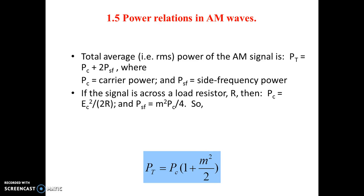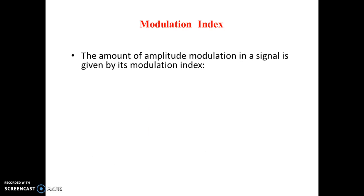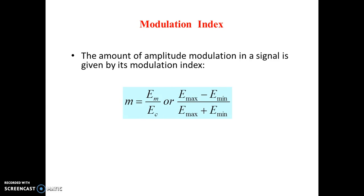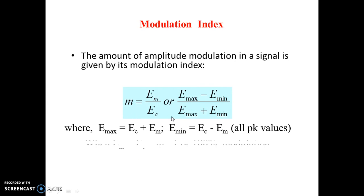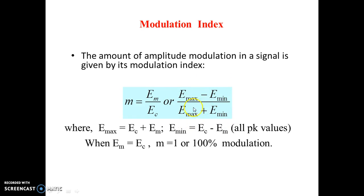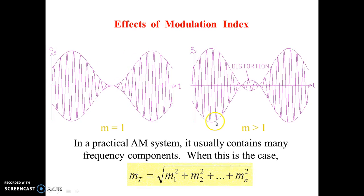For current relations in AM, the current is I = I_0 · √(1 + m²/2), where I_0 is the unmodulated current and m is the modulation index. To calculate the modulation index on an oscilloscope, the formula used is m = (E_max − E_min) / (E_max + E_min). When multiple signals are modulated together, the total modulation index equals the geometric progression of each individual modulation index.